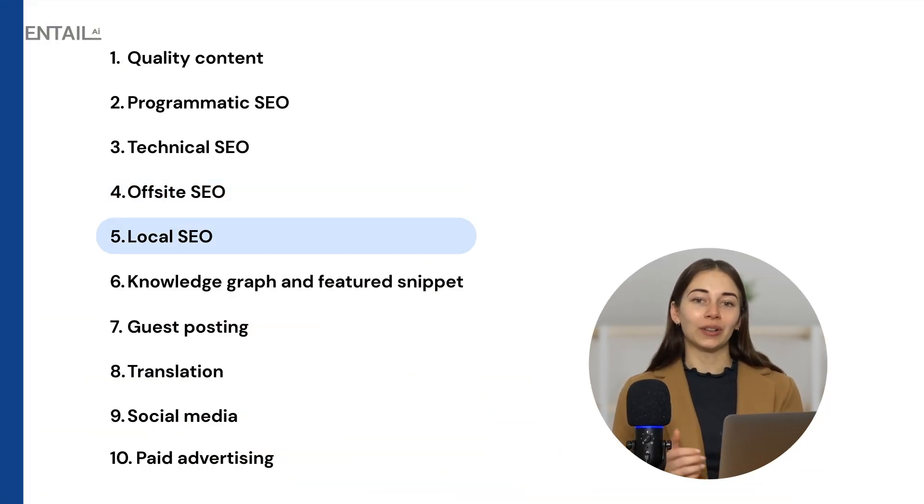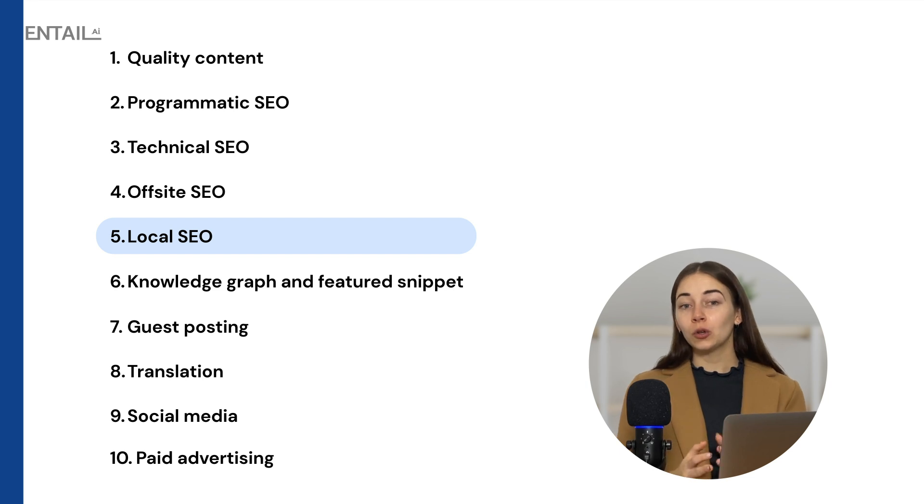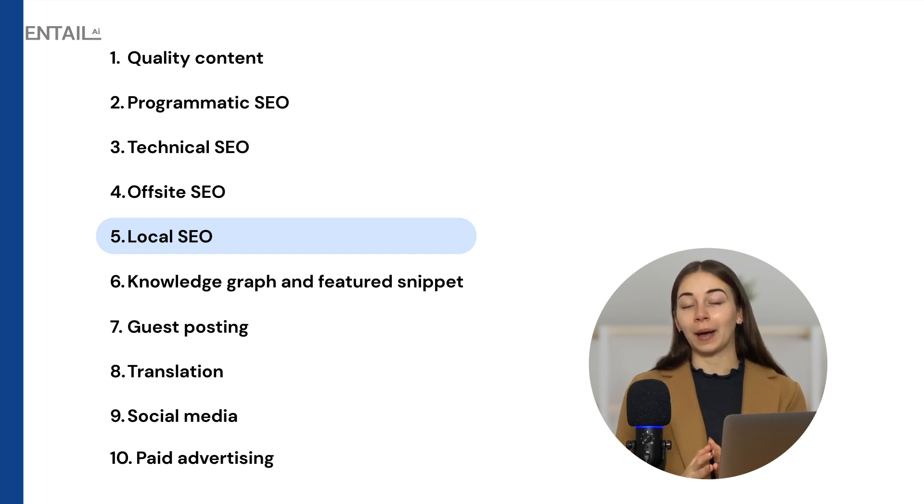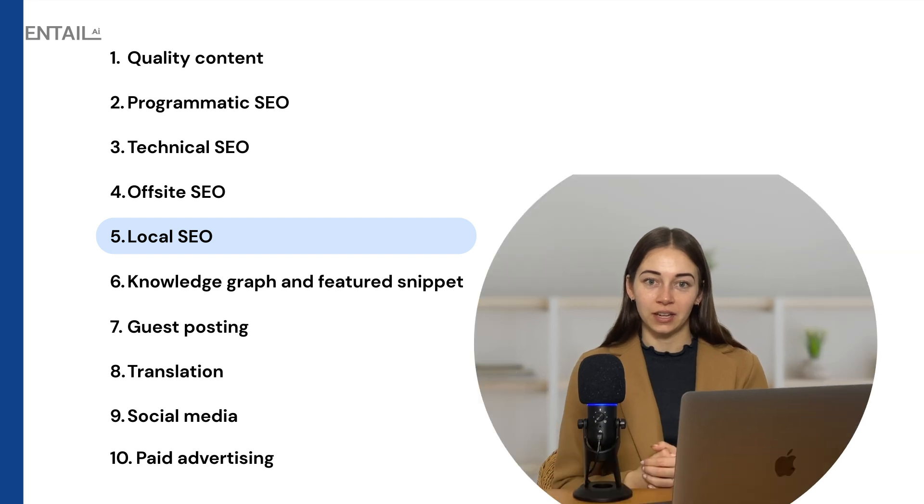Now let's talk about local SEO. If you have a local business or a local segment for your business, you can aim to get it on Google Maps and appear in local searches. Google even has a proximity factor associated with certain searches that you can take full advantage of. Creating a Google My Business listing, building local landing pages for each location, getting your business reviewed by locals, or even getting links from local publications and aggregators can really help you get served locally.